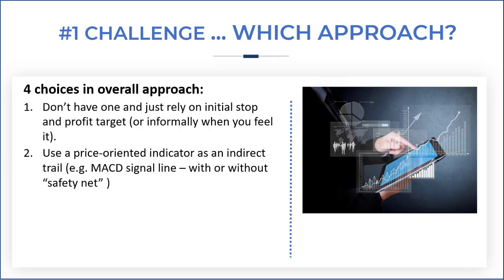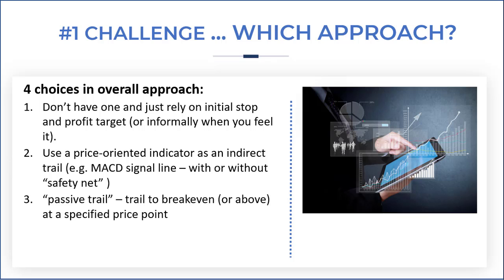The second approach is to use a price-orientated indicator as what we would term an indirect trail. For example, we could use a MACD signal line crossing back over the histogram, with or without a safety net stop in place. Our final video is going to look at this approach in more detail.